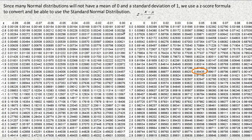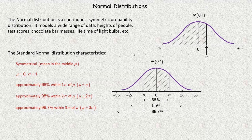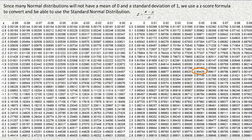The z-score table covers from approximately negative three to positive three, because almost all data — 99.7% — falls within three standard deviations of the mean. In the table, the first column gives the whole number and first decimal of the z-score, and the top row gives the second decimal place. For example, the value 0.00139 corresponds to a z-score of negative 2.99, and 0.99861 corresponds to a z-score of positive 2.99.